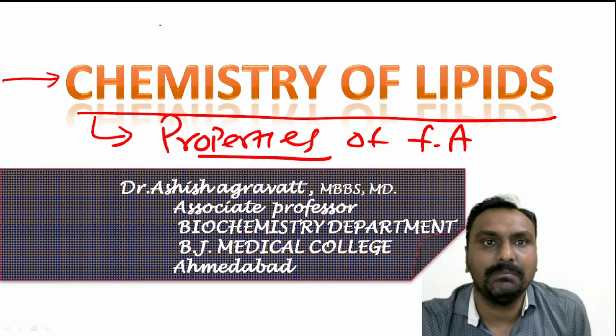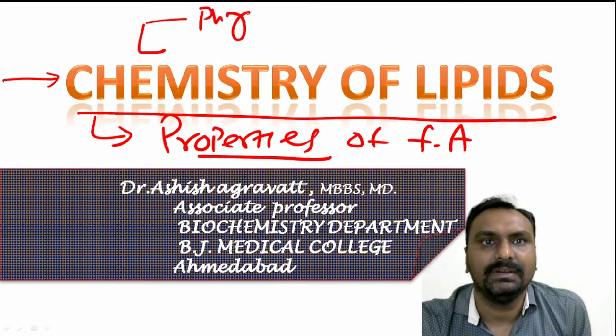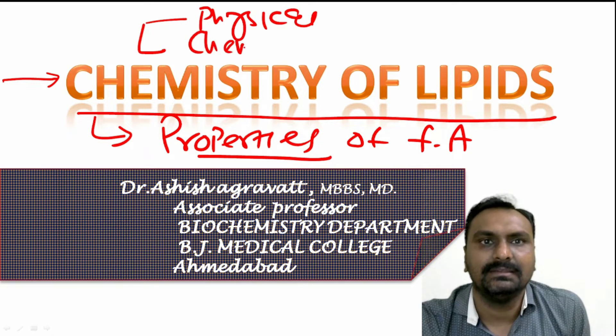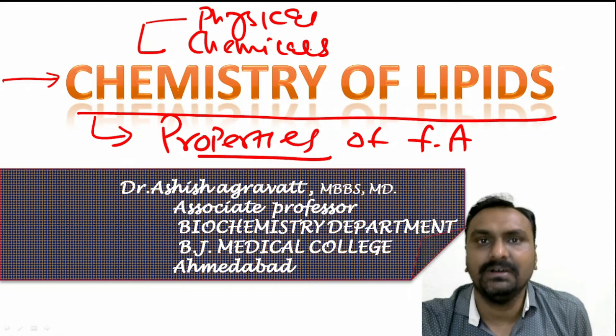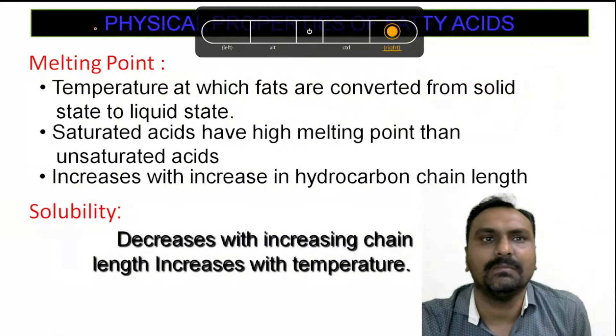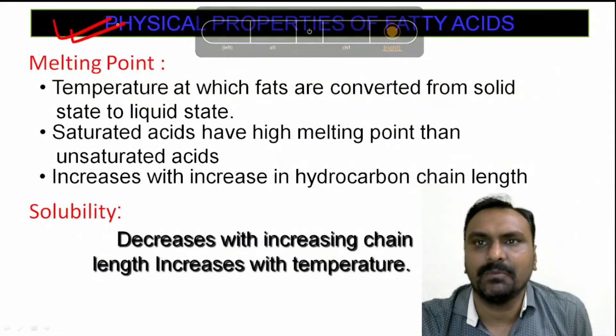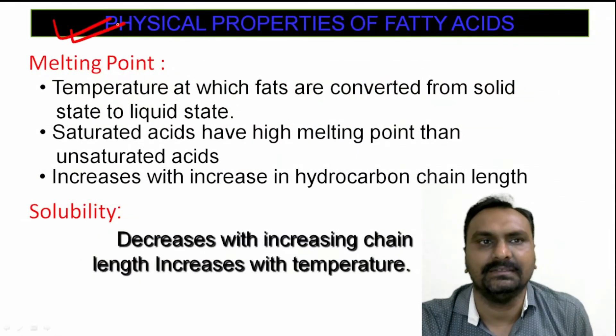There are mainly two types of properties. One is physical properties and one is chemical properties. So first, we will discuss about the physical properties of the fatty acids.